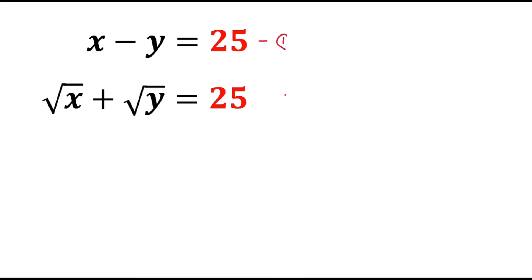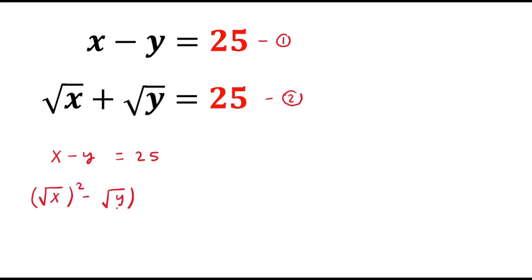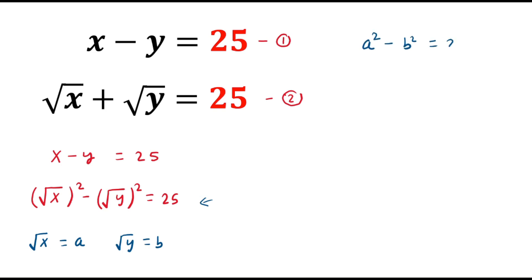Let us consider this equation number first and this equation number second. Look carefully at equation number first: x minus y equals 25. We can write x as square root of x, bracket power 2, minus y as square root of y, bracket power 2, equals 25. Now if we apply substitution: square root of x equals a and square root of y equals b, then this equation becomes a squared minus b squared equals 25.